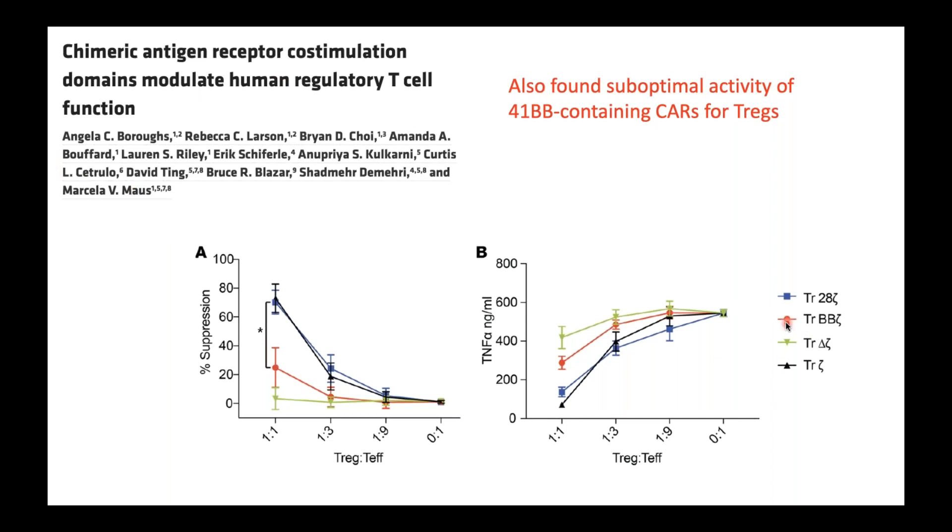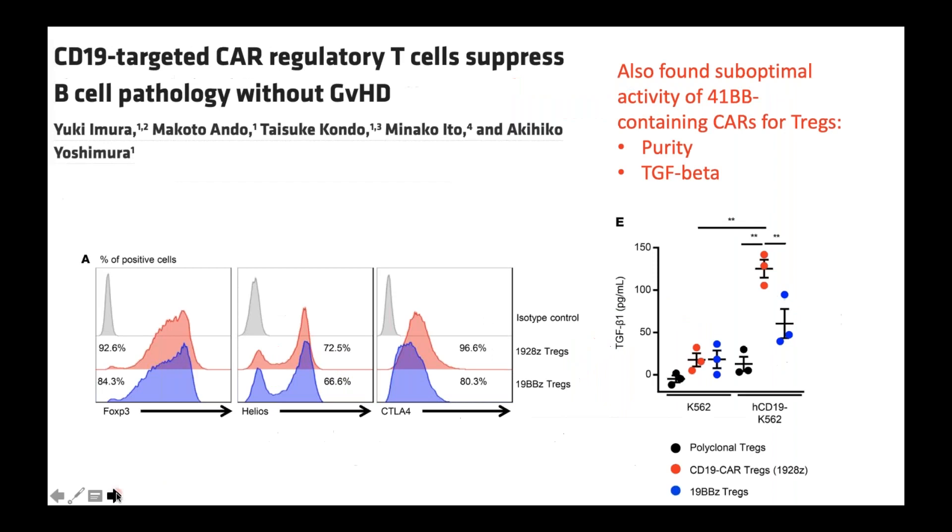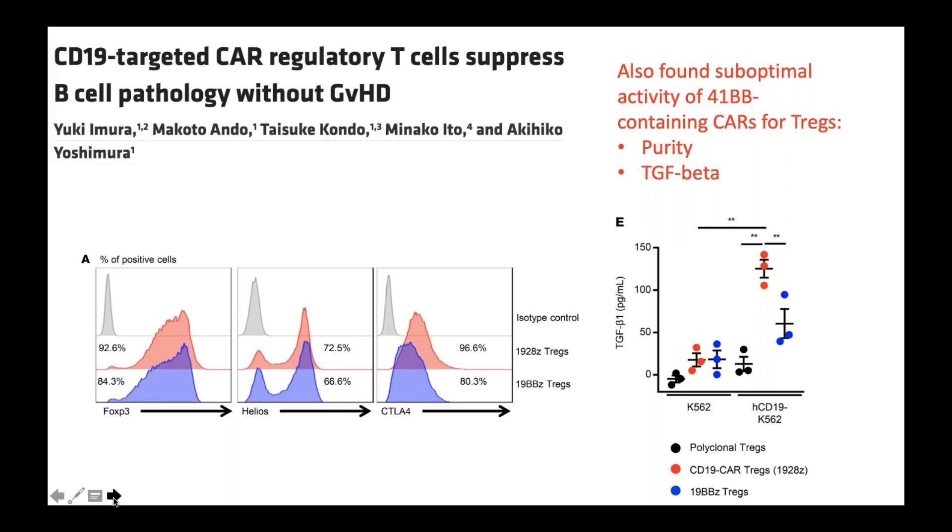I just want to highlight a couple of other papers that really emphasize our findings. So two other studies that also looked at 4-1BB CARs for Tregs. One paper from Marcella Mauss's lab, they compared human Tregs expressing a 4-1BB CAR versus a CD28 CAR, and you can see they basically got the same result. More recently, a paper from the Yoshimura labs showing that the 4-1BB CAR, as we had shown, is not very good at producing TGF-beta.